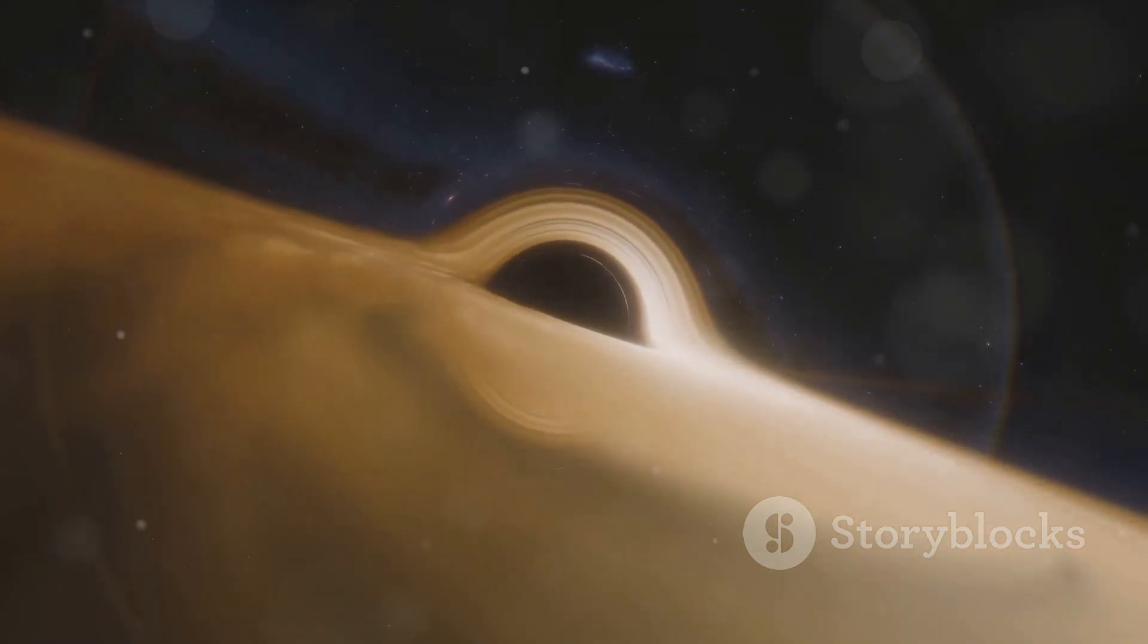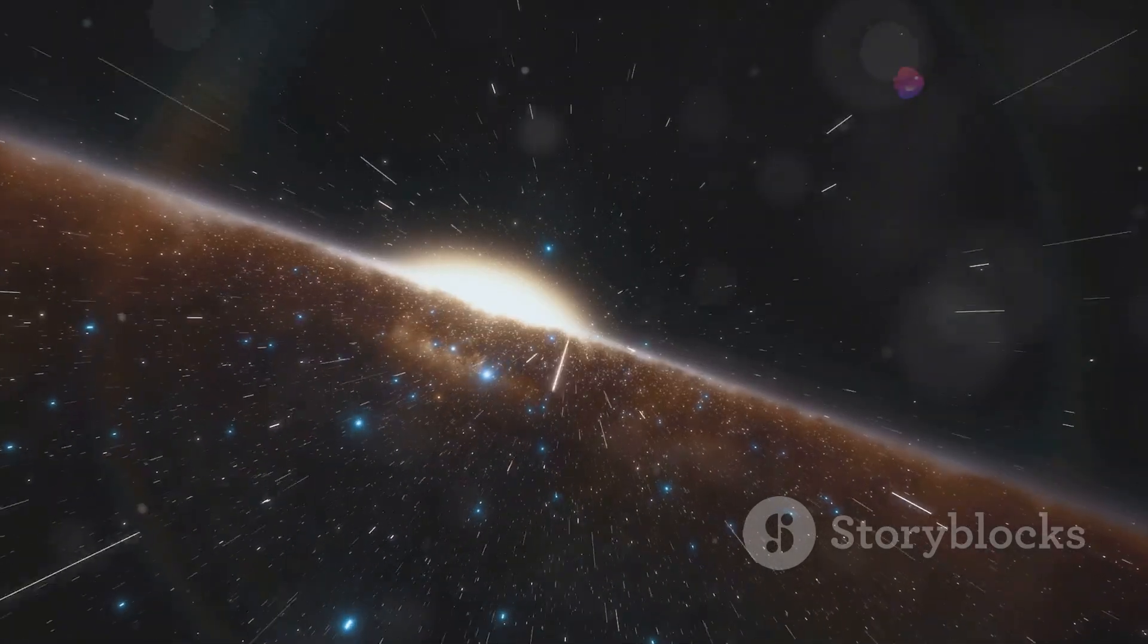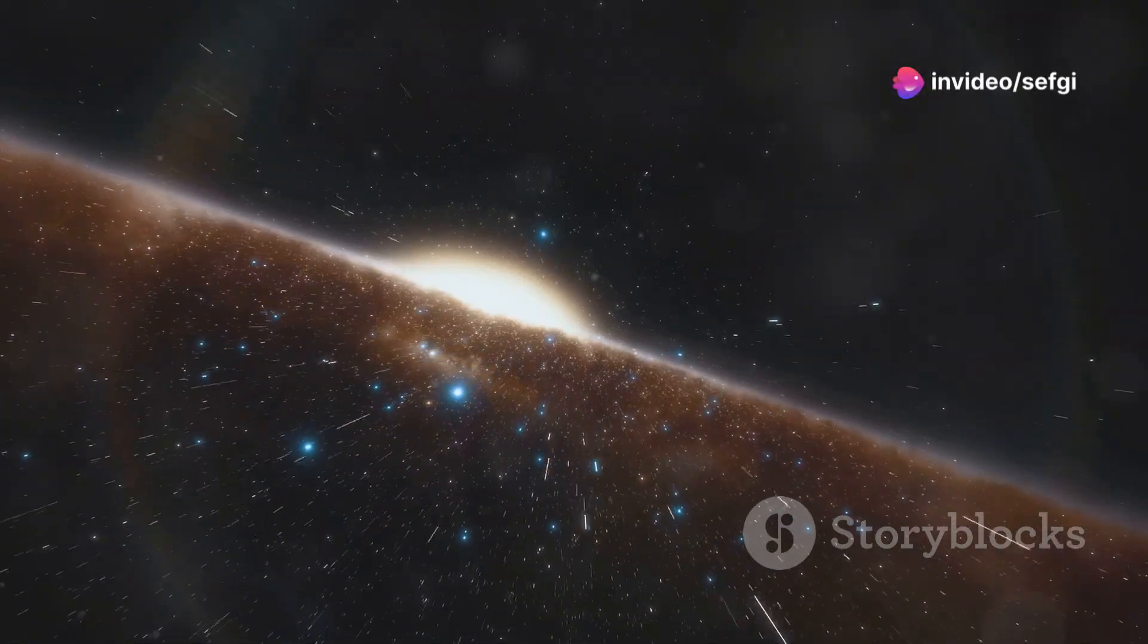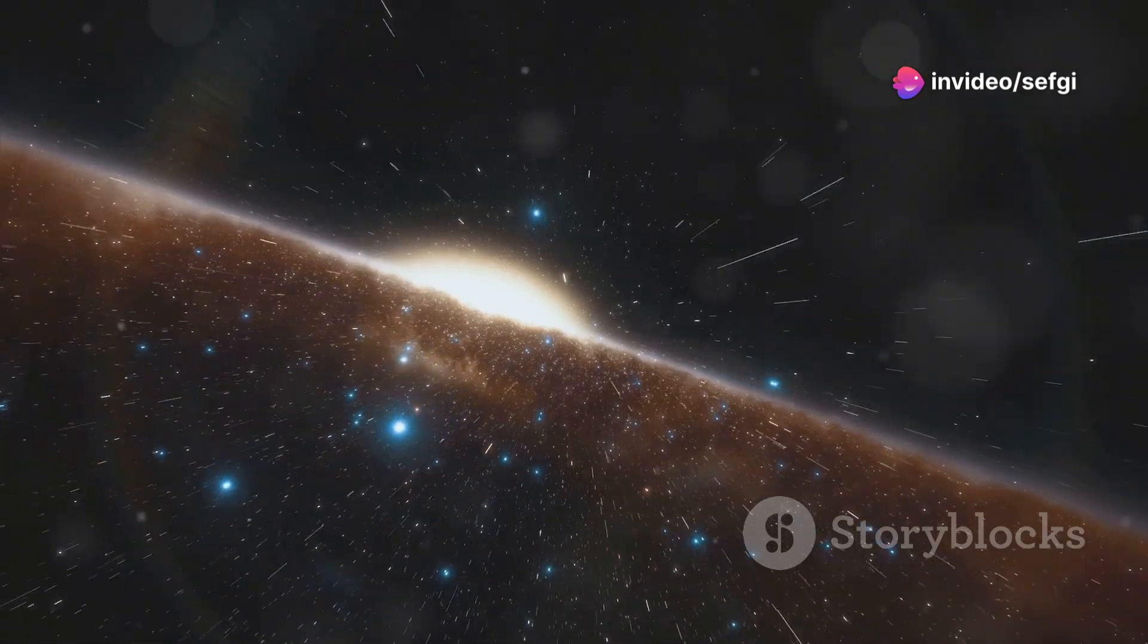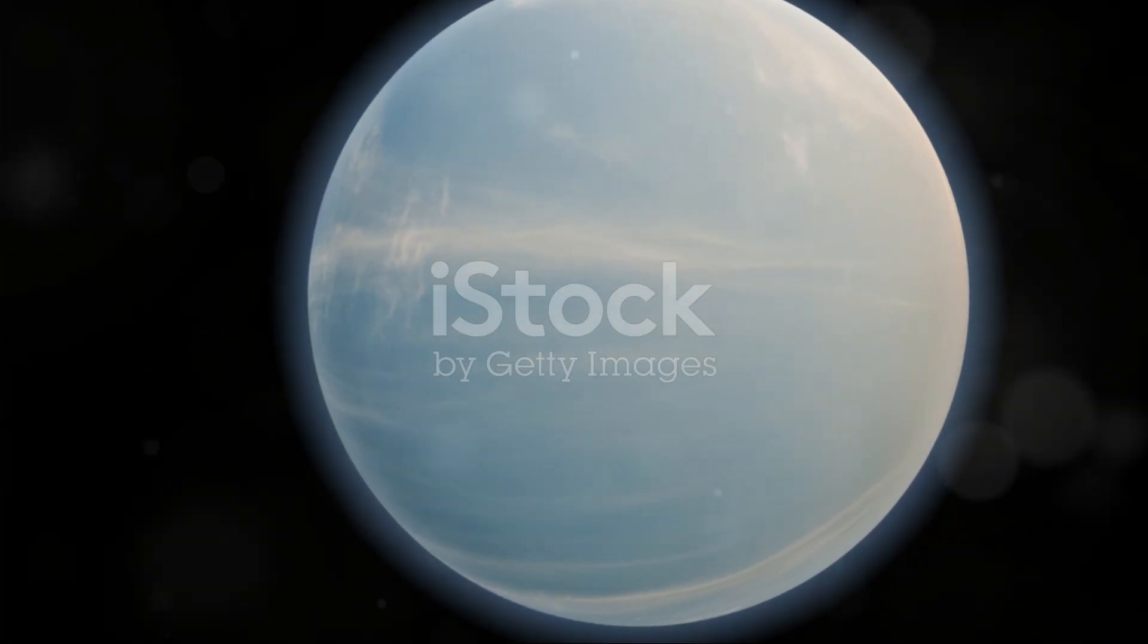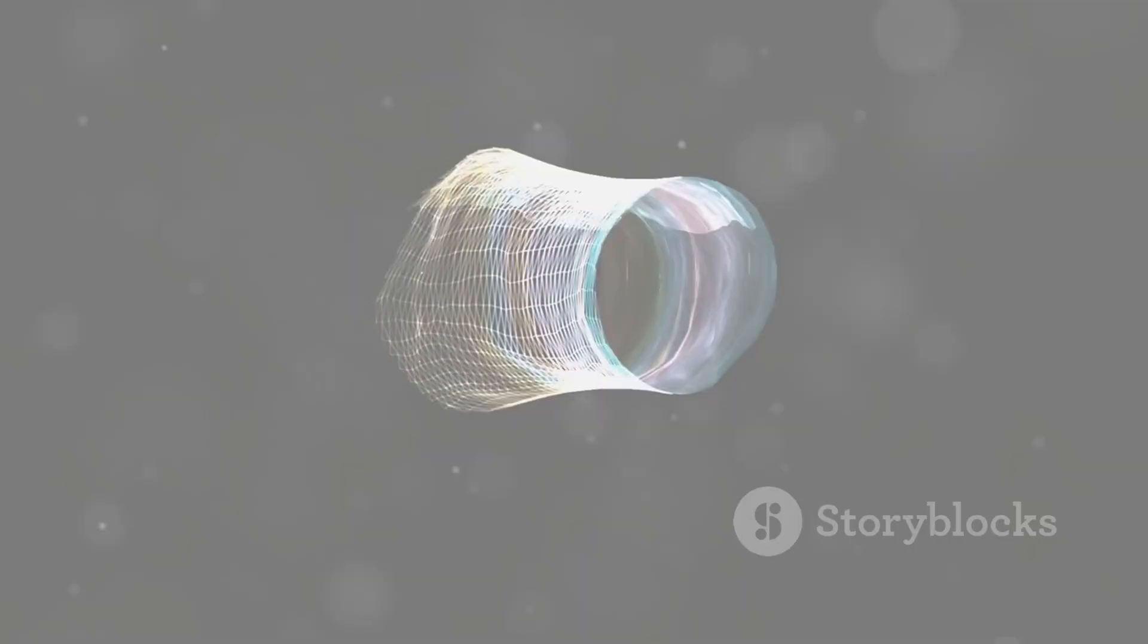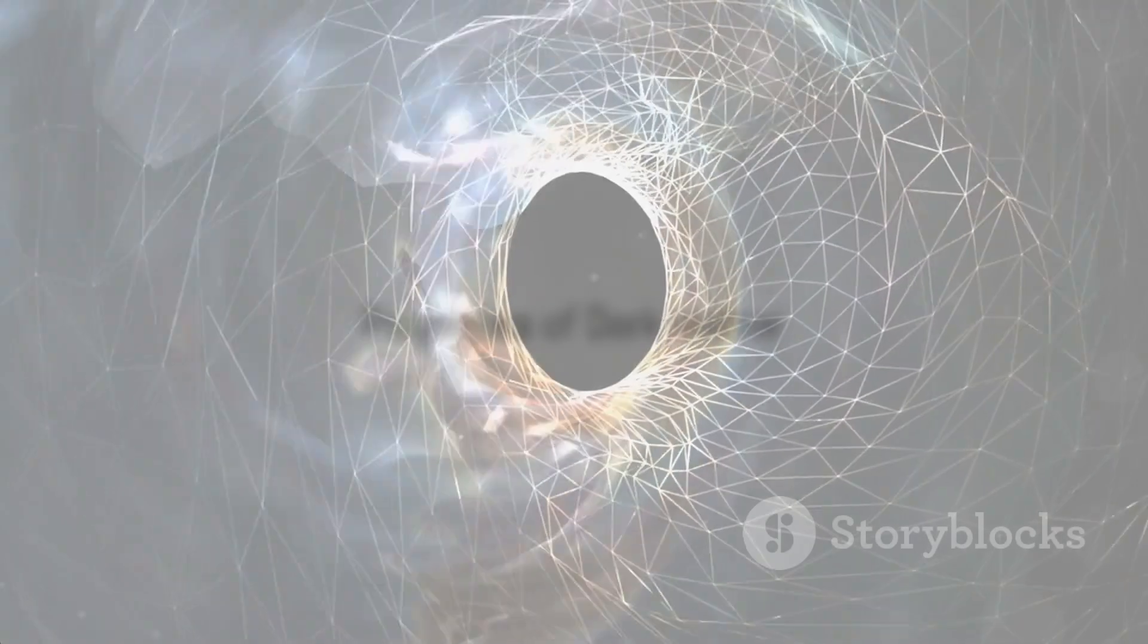Another crucial piece of evidence came from the study of gravitational lensing. Massive objects warped the fabric of spacetime, causing light to bend around them. The amount of lensing observed around galaxy clusters was far greater than expected based on their visible mass. This suggested that dark matter was responsible for the extra gravity causing this enhanced lensing effect. Further evidence came from the study of the cosmic microwave background radiation. These observations have solidified the case for dark matter, transforming it from a fringe idea to a cornerstone of modern cosmology.